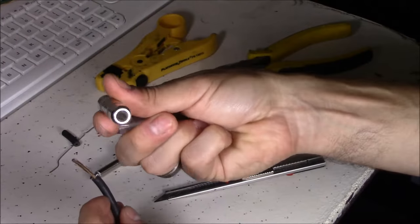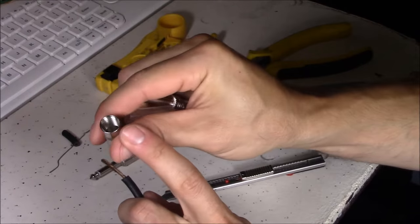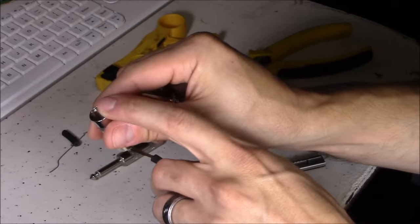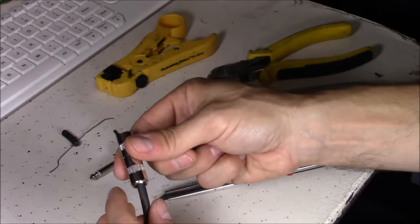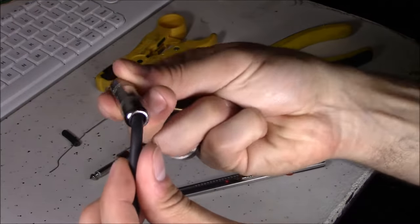This metal sleeve goes on first. Make sure you put it on the right way. This is where you screw it on right here. So that's going to be down on the outside of the cable. You're going to have it like that.